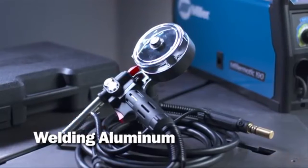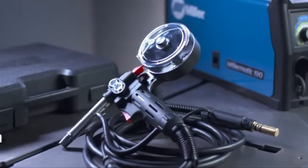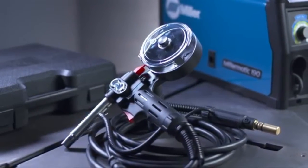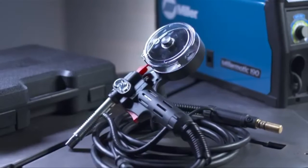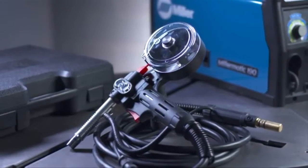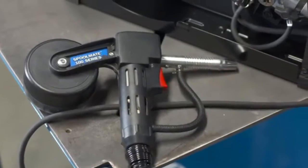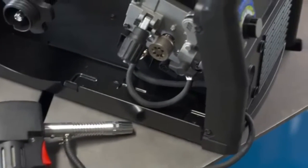To weld aluminum, the setup process is slightly different. Aluminum welding involves argon gas and a spool gun to feed the wire consistently. The process for installing the optional spool gun is similar to installing the MIG gun.